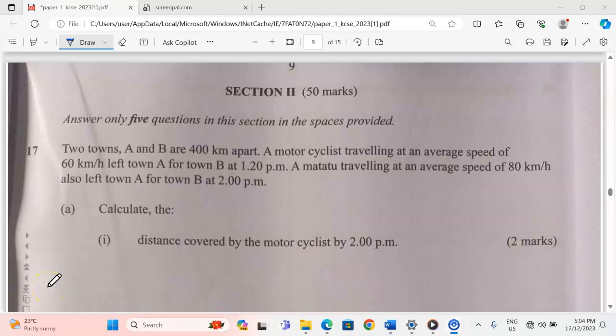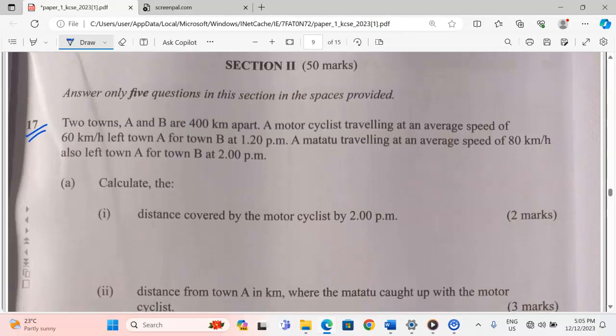Thank you for joining this lesson. Mathematics paper 1, number 17, the case is 23. Number 17 says towns A and B are 400 kilometers apart. A motorcyclist traveling at an average speed of 60 kilometers per hour left A for B at 1:20 PM. A matatu traveling at an average speed of 80 kilometers per hour also left A for town B at 2 PM.